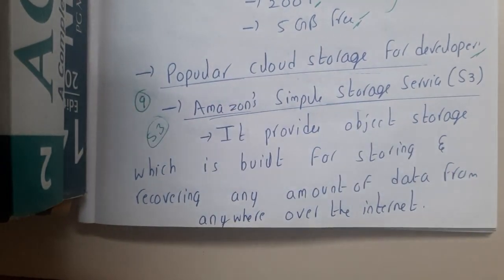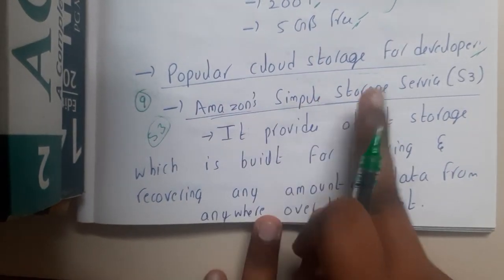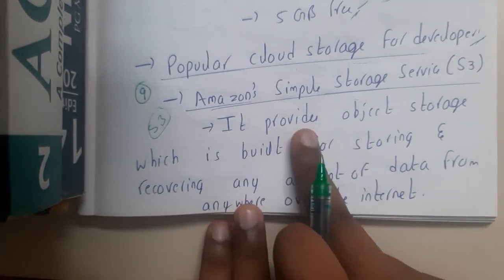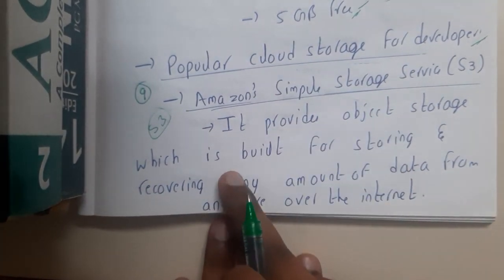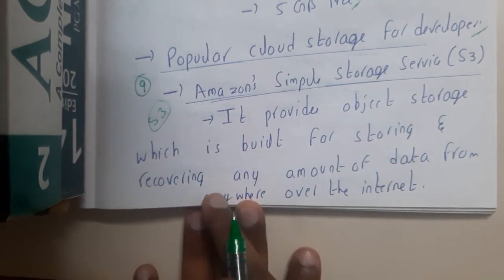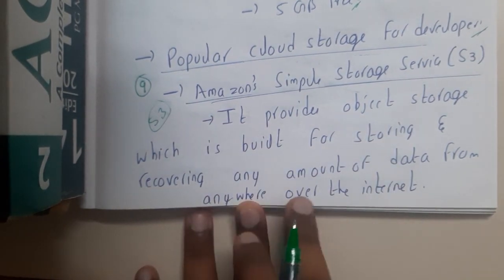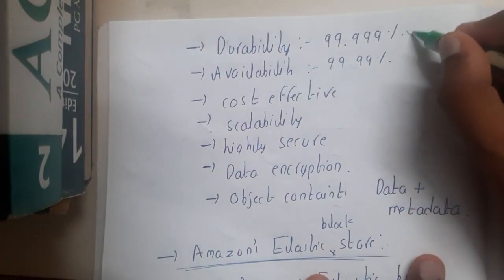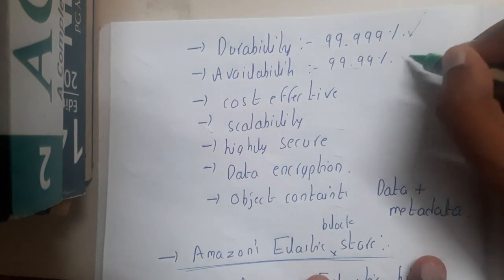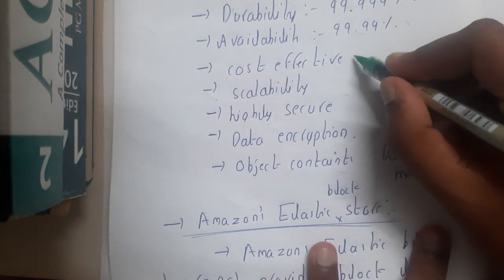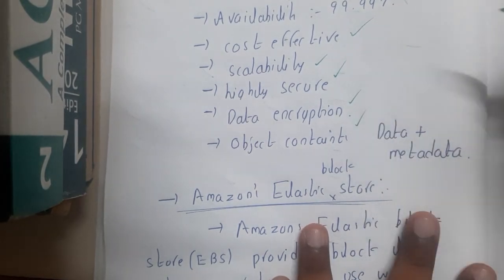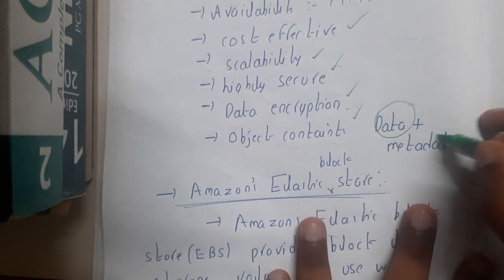The full form of S3 is Amazon Simple Storage Service. It provides object storage, which is built for storing and recovering any amount of data from anywhere over the internet. It is durable, 99.99% available, cost-efficient, scalable, highly secured, and supports data encryption. Data objects may also contain metadata.